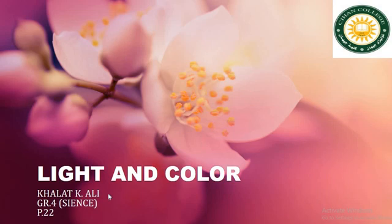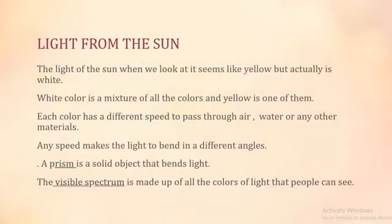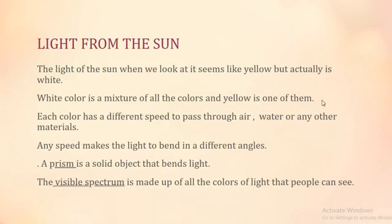Hello dear student, welcome back to Jehan College online school. Today we have science - our subject is about light and color, page 222. This subject is for grade 4. Let's start with light from the Sun. The source of light is the Sun. When we look at sunlight it seems like yellow, but actually it's white. White color is a mixture of all the colors, and yellow is one of them.